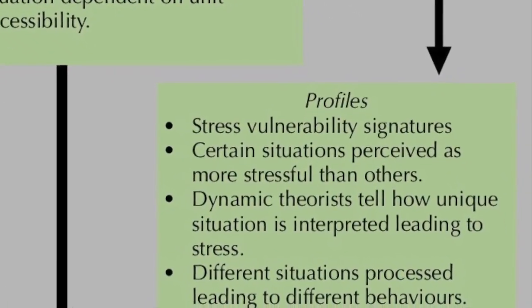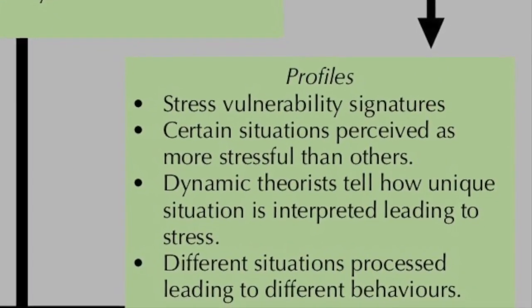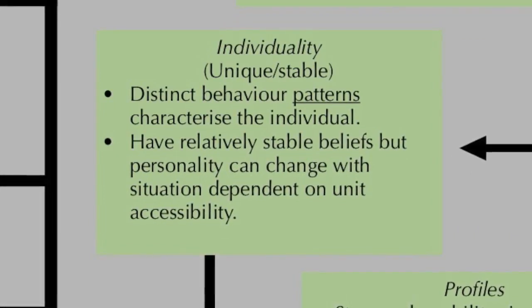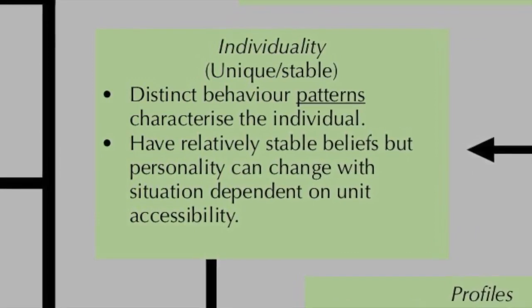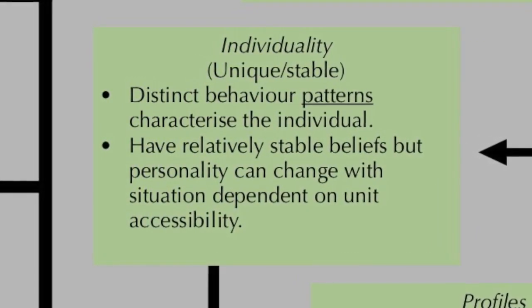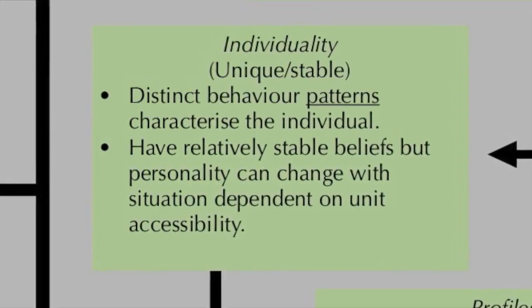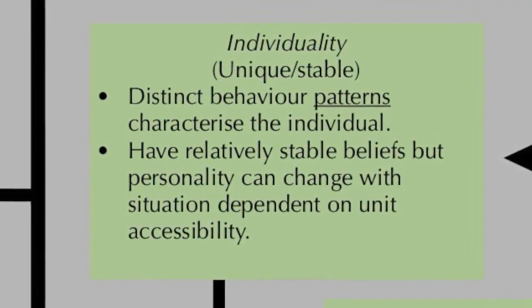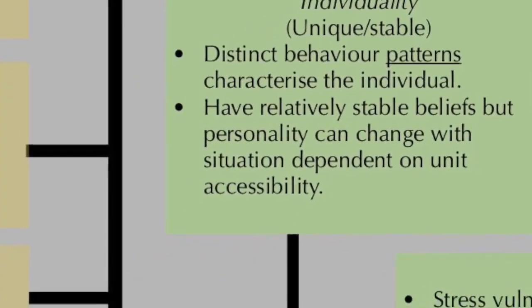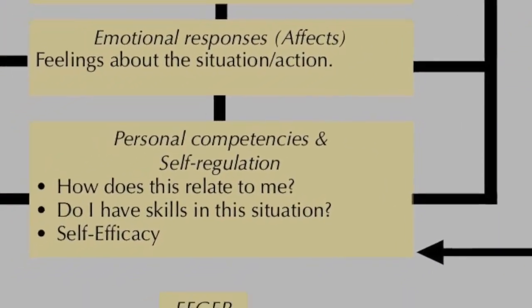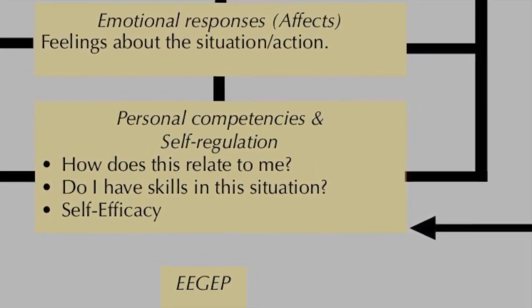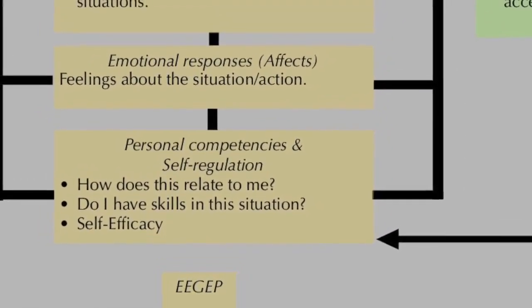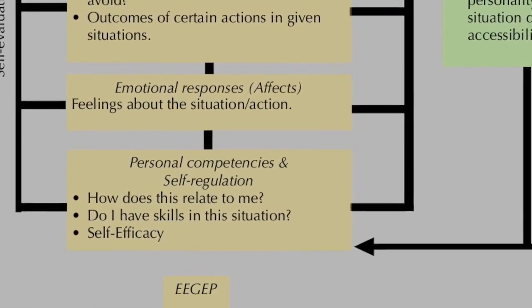Different situations are processed leading to different behaviors and different reactions. This includes the individuality and stability of certain behavior — distinct behavioral patterns that characterize the individual and that have relatively stable beliefs. Personality can change with the situation depending on unit accessibility. All of this behavior then comes back to personal competencies and self-regulation, continuing inward perception as to whether their behavior was appropriate in the certain situation, and so on.